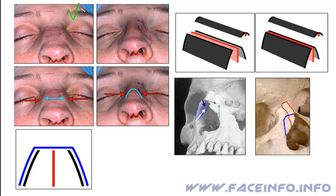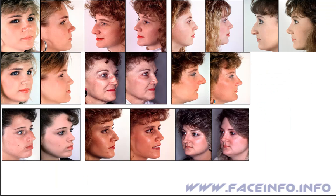This is fixed by osteotomy — the surgical cutting or dividing of bone, usually to correct a deformity. The bones are cut here, brought together and fixed, so the bones are set closer together, as shown in this picture. These are photos before and after rhinoplasty including bulge removal.